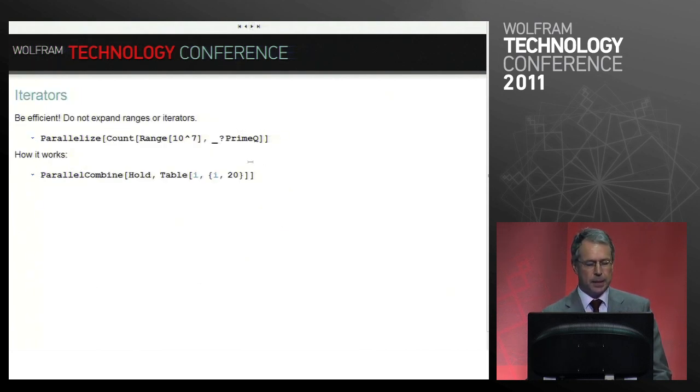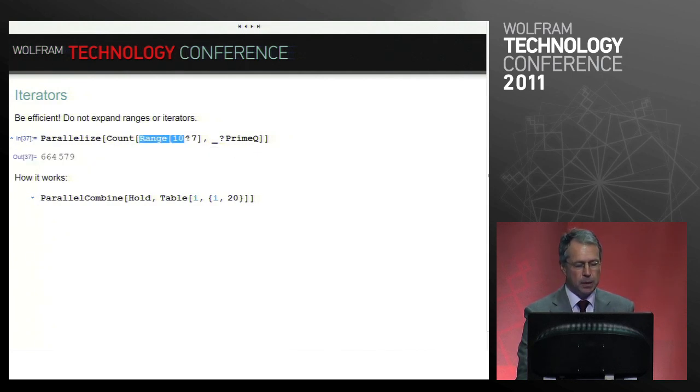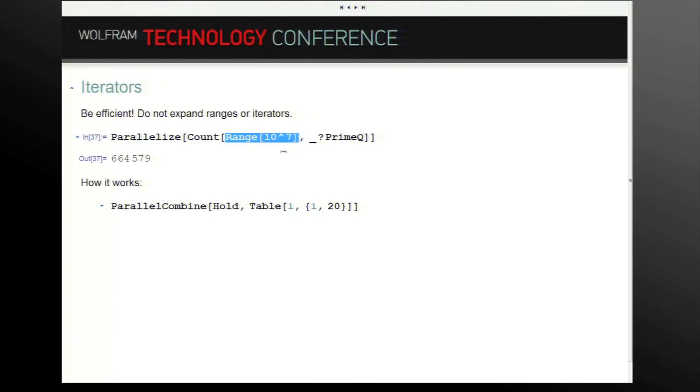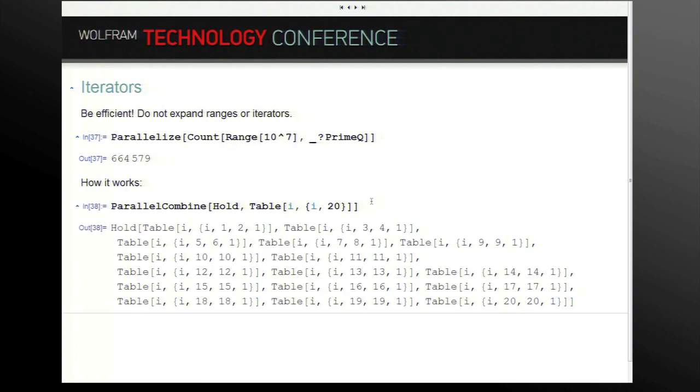Another interesting case is the iterator. If I want to count the number of primes among the first 10 million integers, if you did it naively you would expand this range into a list of 10 million elements and then divide it into 8 pieces and send to the remote kernels. But I can be a bit more clever about this. I can dissect that range symbolically into 8 ranges and then send the range commands to the remote kernels, because the range command is 10 characters and not 1.2 million elements. So here is how it works. When I have a table here, it dissects the table. It goes from 1 to 2, then from 3 to 4, 5 to 6 and so on. So it creates subtable commands and sends those commands to the remote.